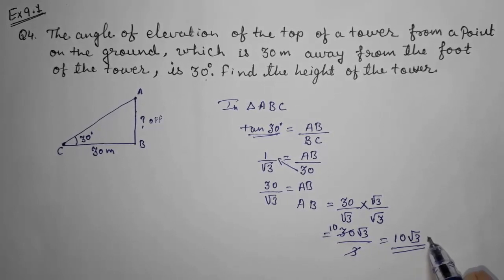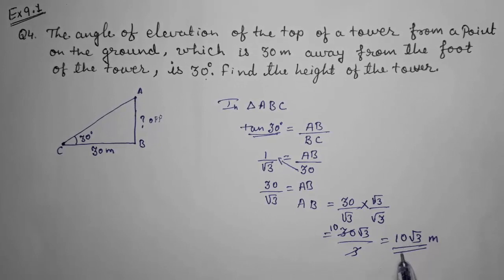So we can say the height of the tower is 10 root 3 meters. So this way we can solve this sum. Thank you so much for watching my video. If you like it, please subscribe to my channel. Thank you so much.